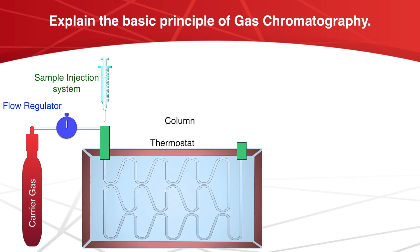And then comes thermostat. Sample injection system, column and detectors must be kept at higher temperature. The column is operated at a known constant temperature which may vary from room temperature to 623K. And this depends upon the volatility of the liquid phase.